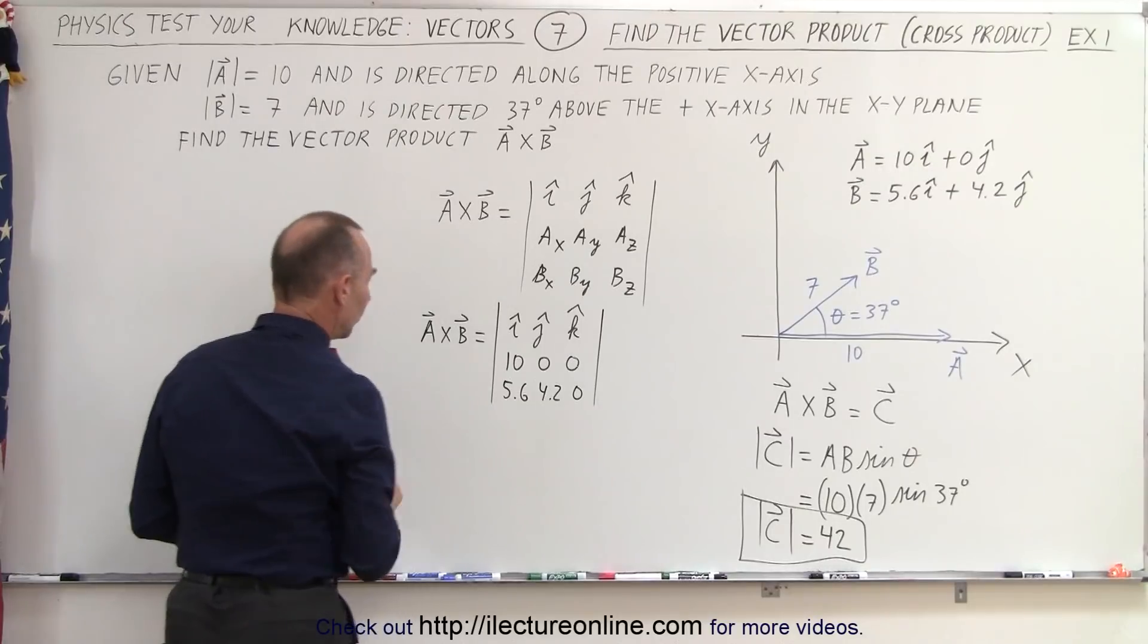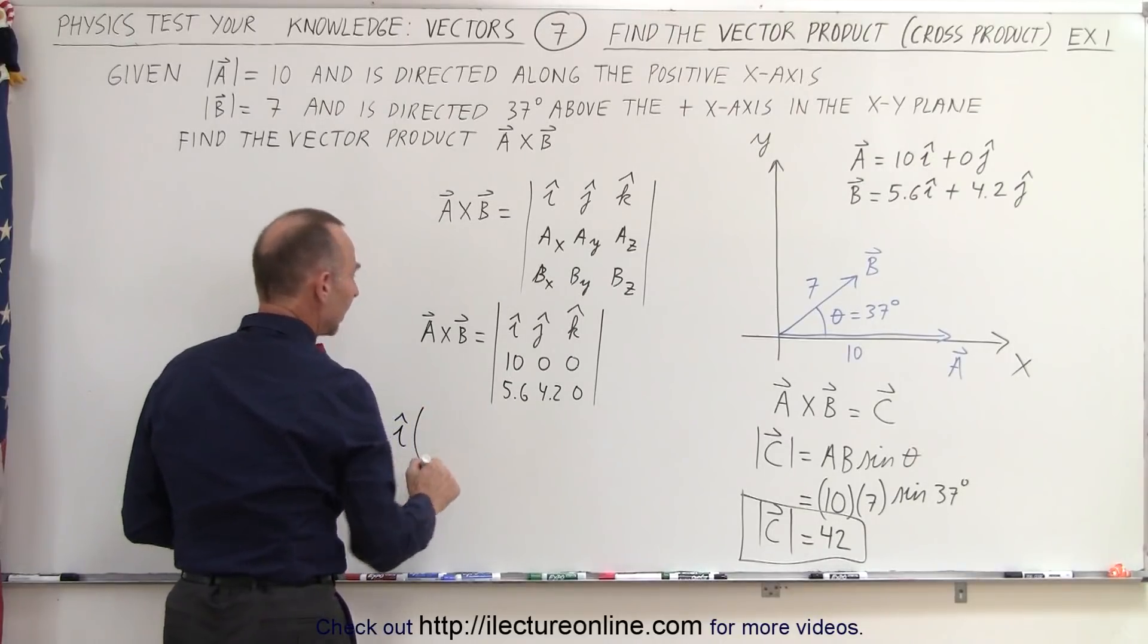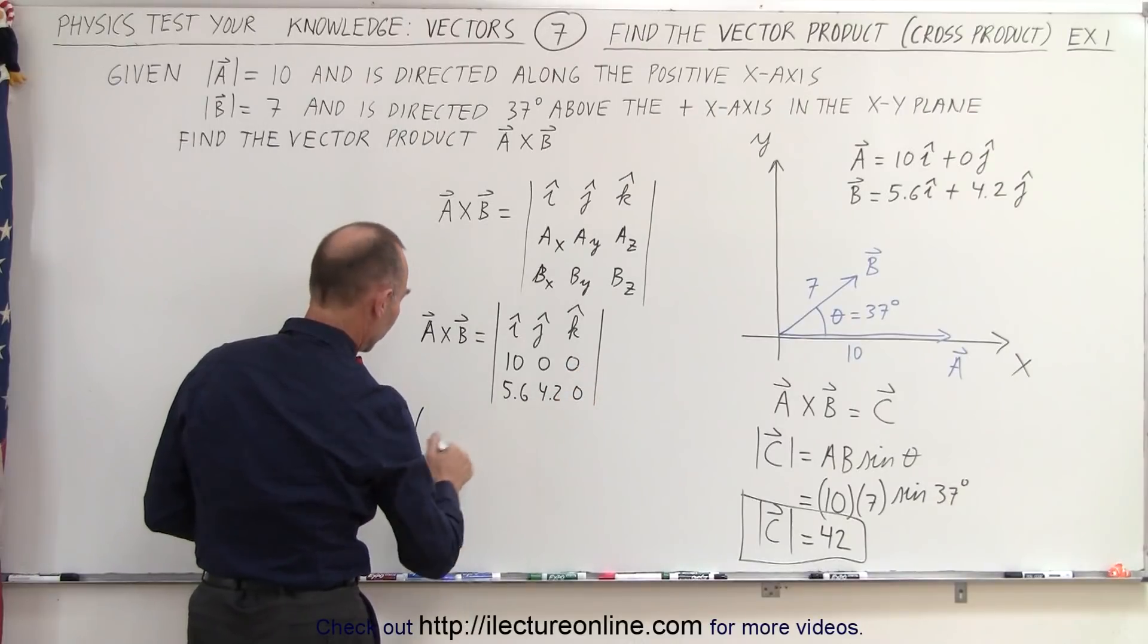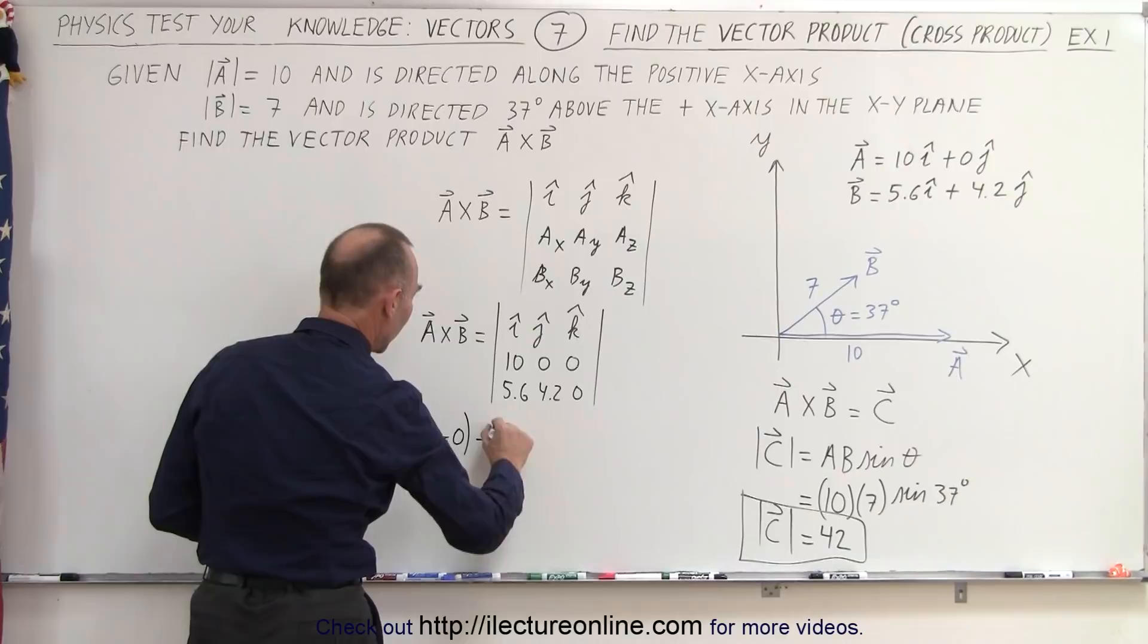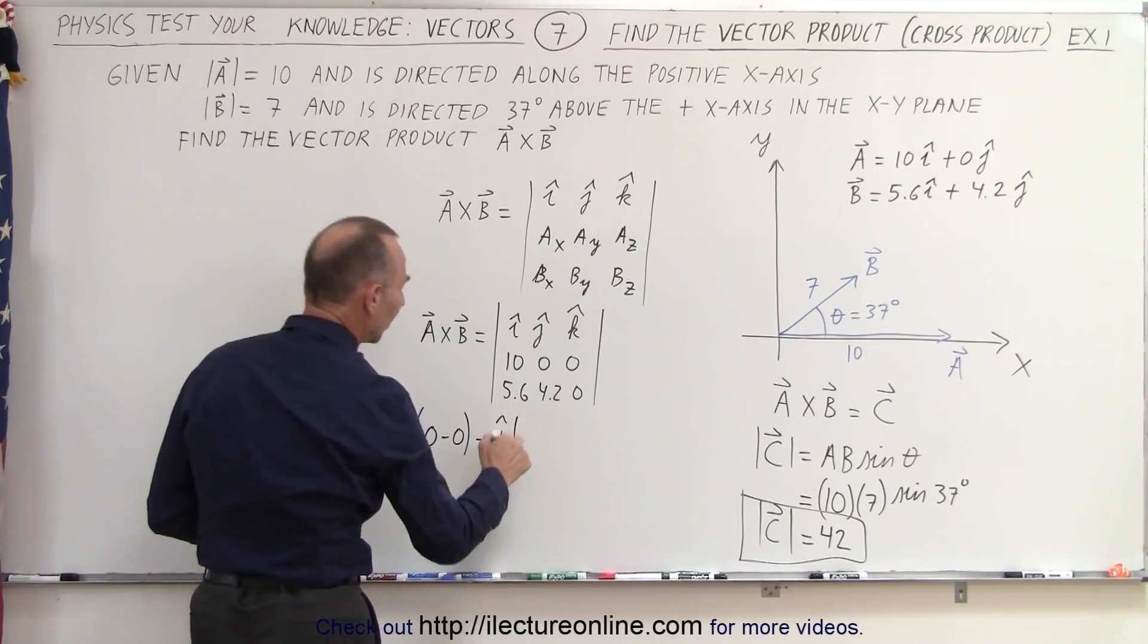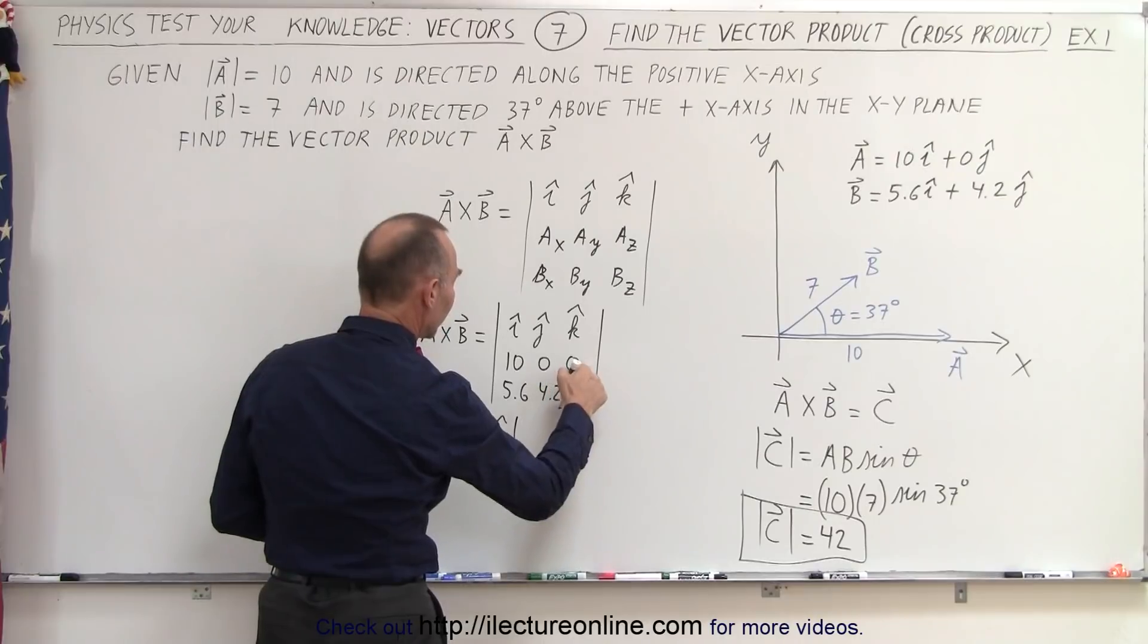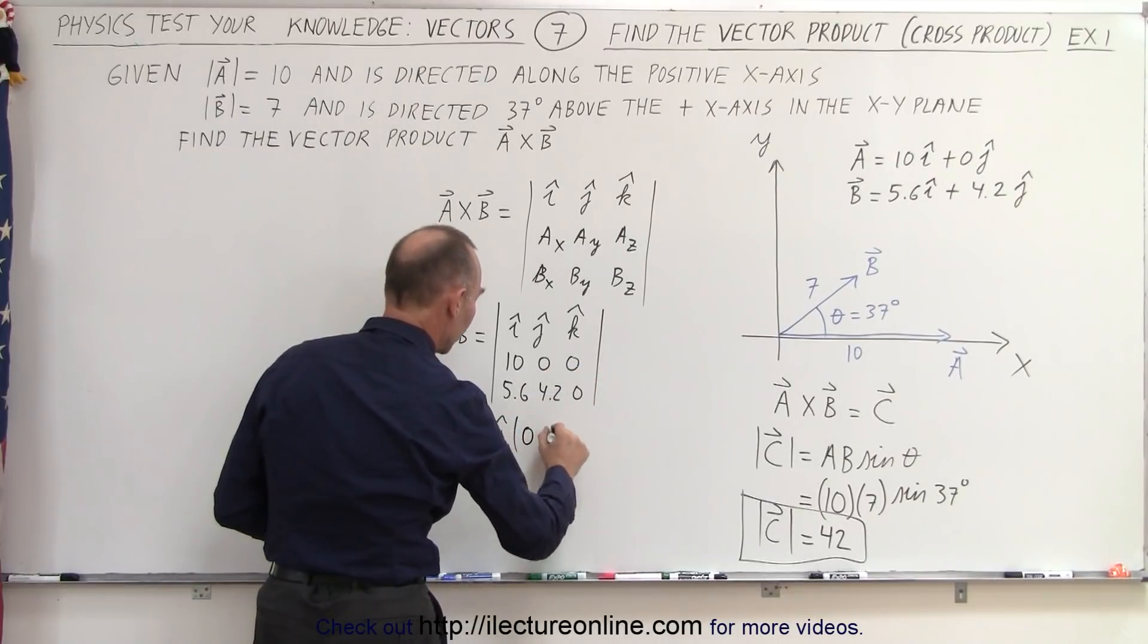So to work that out, we get I times the product of 0 times 0 minus 0 times 4.2. So that would be 0 minus 0. Minus J, because we have to alternate signs, so that would be 10 times 0 minus 0 times 5.6. So again, there's no components there.